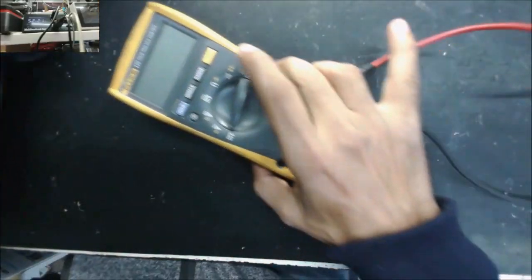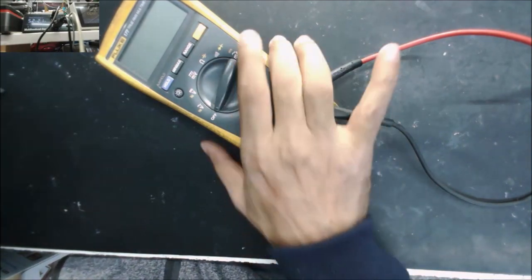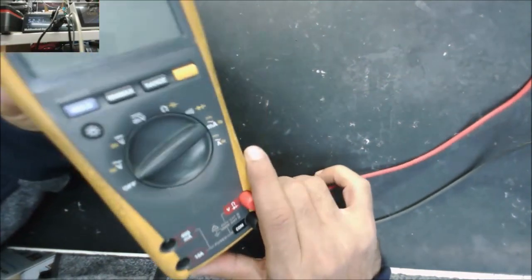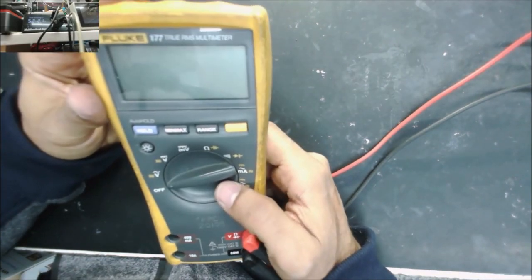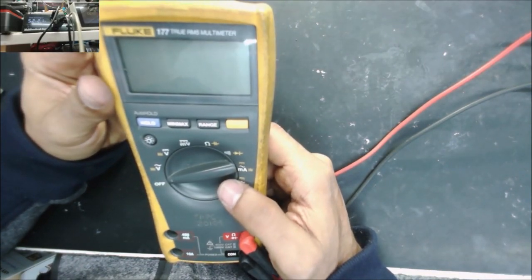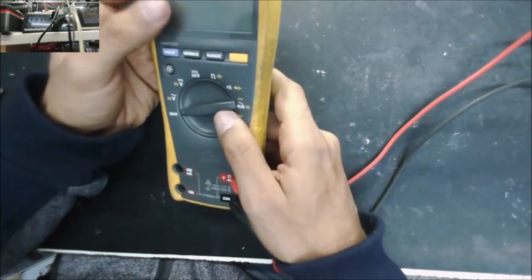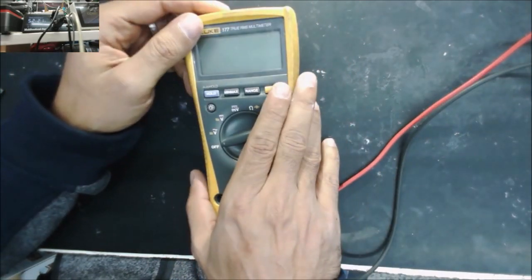Hello everyone. For the repair today we have this Fluke 177. The customer brought it in because the multimeter doesn't work right and some readings are incorrect.